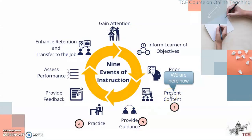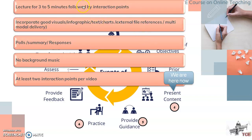For the fourth step — presenting content — you can have your lecture for 3 to 5 minutes followed by a few interaction points. Try to embed your lecture with good visuals, infographics, text, charts, and external file references, because users watching a video want to see materials in different modes. Include polls, summaries, and responses as interaction points — quizzes or short summaries work well. There should be no background music as it will distract the user. Please put at least 2 interaction points per video in a video of 10 to 15 minutes; if your video is very short, one is enough.